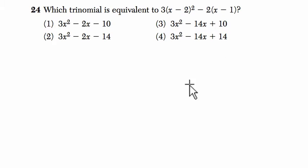Alright, so I feel like the best way to solve this is just to write it out and simplify it. We have 3 times x minus 2 squared, so that's 3 times x minus 2 times x minus 2, minus 2 times x minus 1.